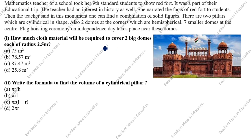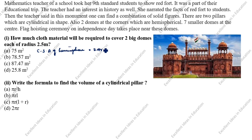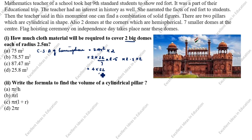How much cloth material will be required to cover two big domes, each of radius 2.5 meters? The shape of this dome is a hemisphere. So we will take the curved surface area of a hemisphere. The CSA of a hemisphere formula is 2πr². For two big domes: 2 × (2 × 22/7 × 2.5 × 2.5), writing 2.5 as 25/10.